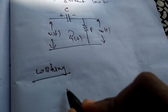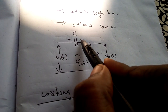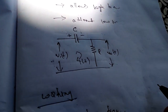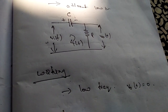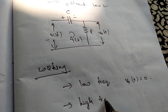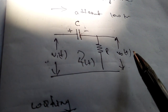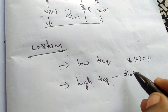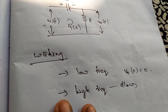Whenever low frequencies occur, the capacitor acts as an open circuit, so input will not transmit to the output and the output will be zero — it stops low frequency signals. Whenever high frequency is supplied, the capacitor acts as a short circuit, so whatever input we supply will appear entirely at the output, allowing high frequency signals. That is the operation of high-pass and low-pass RC circuits.